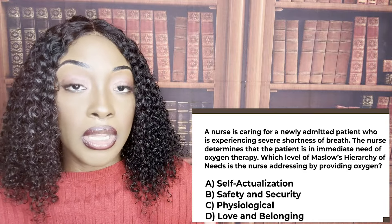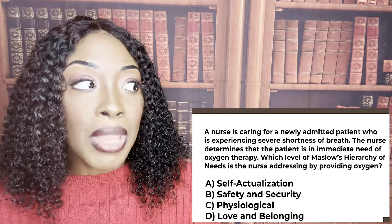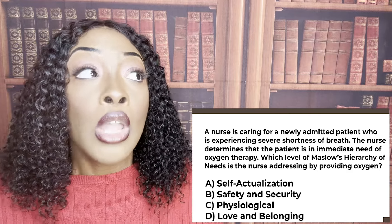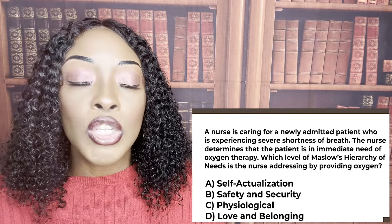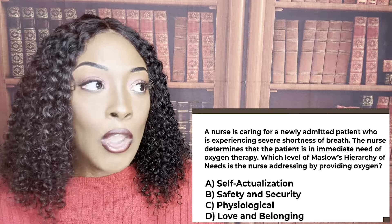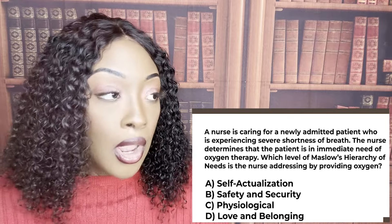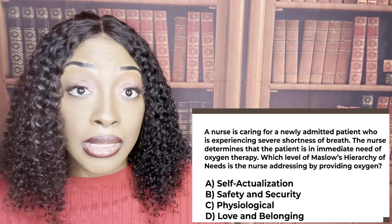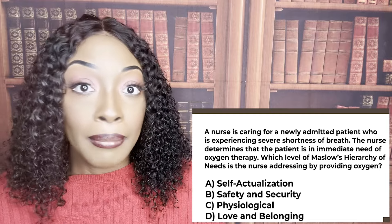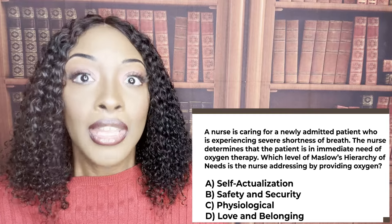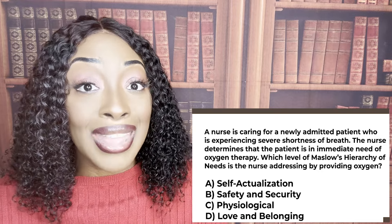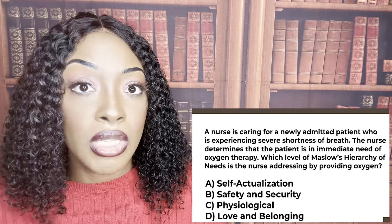The correct answer is physiological. If the patient needs oxygen and you're giving them oxygen, you're addressing a physiological need. When you think of physiological, think about anything that physically keeps your patient alive — oxygen, food, water, fluid and electrolytes, because fluid and electrolyte imbalance can kill your patient. Glucose — hypoglycemia or hyperglycemia can kill your patient. Anything that can physically cause harm or kill your patient falls under physiological integrity.